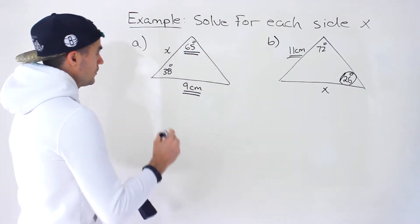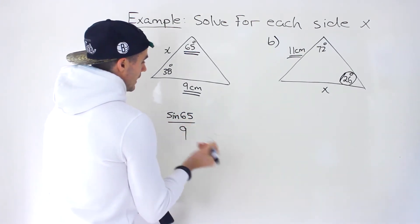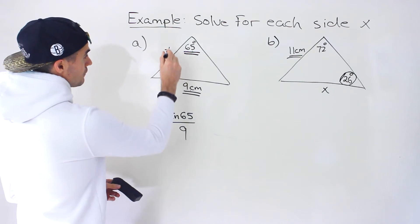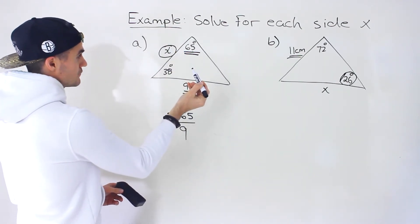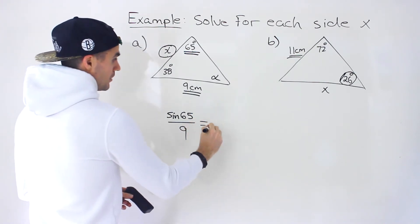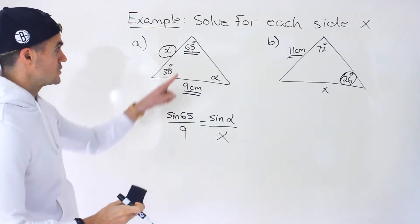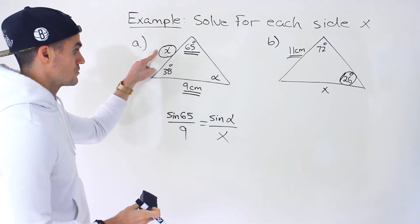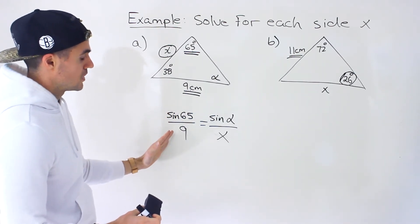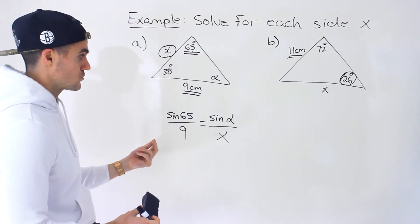From there, what we can do is set up: sine of 65 over 9. We could set up that ratio right away with the angle and the opposite side. Now what we're solving for is this x value — the length of this side. But notice that we don't have the opposite angle. So we could call this angle alpha, and we'd set up a ratio: sine of alpha over x. The ratio of the sine of this angle to this side.